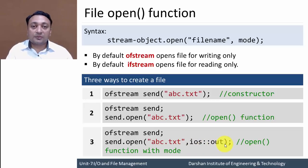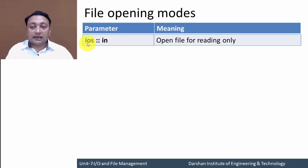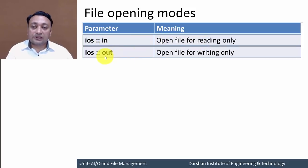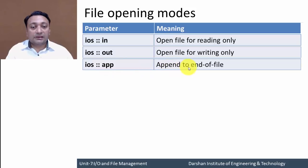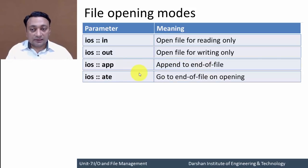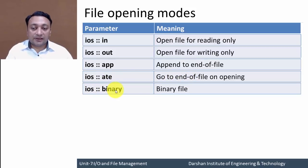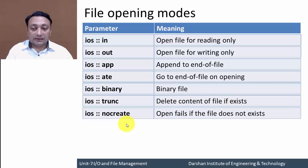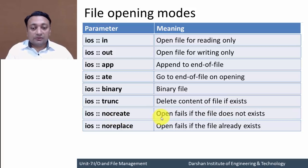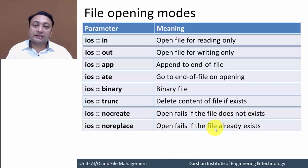Let us discuss the various file opening modes for the open function. The first mode is ios::in, which opens a file for reading only. Next, ios::out opens a file for writing only. ios::app appends new data to the existing data. ios::ate goes to the end of the file on opening. Binary and truncate modes are also available. ios::nocreate causes open to fail if the file does not exist, and ios::noreplace causes open to fail if the file already exists. More generally, we will be using in, out, and append modes.